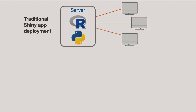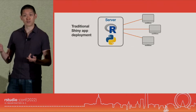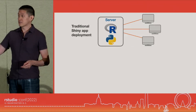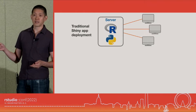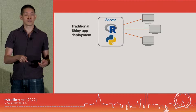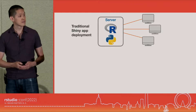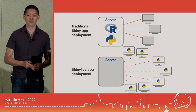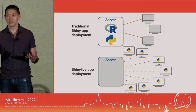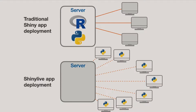Let's look at the deployment model. For a traditional Shiny app deployment, you have a server running R or Python, and computers connect to it and maintain an open connection. The user interacts with it, it sends data to the server, the server does some computation, and sends information back. For Shiny Live app deployment, you have a server that doesn't run R or Python. When the user connects, it sends Python, the app code, and Shiny to those client computers, and all of that runs inside the client computers. It's very easy for a server to just send those files — not computationally intensive — so you can serve a lot of users this way.